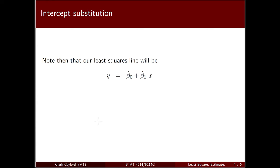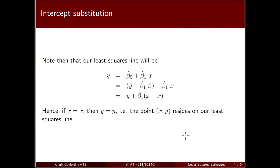As a result of this rewriting, we see that when x equals x bar, this term becomes zero and y equals y bar. So the point (x bar, y bar) resides on our least squares line. The question now is, what's the slope of that line?